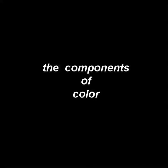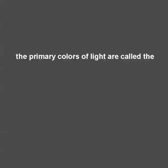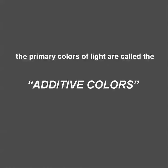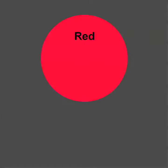The title of this presentation is the Components of Color. In this slideshow, we're going to learn the names of the six colors that make up the color wheel. First of all, the three primary colors that make up our color wheel are called additive colors — and these are familiar colors, I'm sure. There's red, green, and blue.